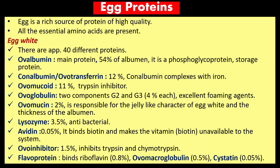Ovalbumin is the main protein at 54% of albumin and is a phosphoglycoprotein and storage protein. Conalbumin (ovotransferrin) is 12% and complexes with iron. Ovomucoid is 11% and is a trypsin inhibitor. Ovoglobulin has two components G2 and G3. Lysozyme is 3.5% and is antibacterial. Avidin at 0.05% binds biotin, making vitamin biotin unavailable to the system. Ovoinhibitor at 1.5% inhibits trypsin and chymotrypsin. Flavoprotein binds riboflavin. Ovomacroglobulin is 0.5% and cystatin is 0.05%.